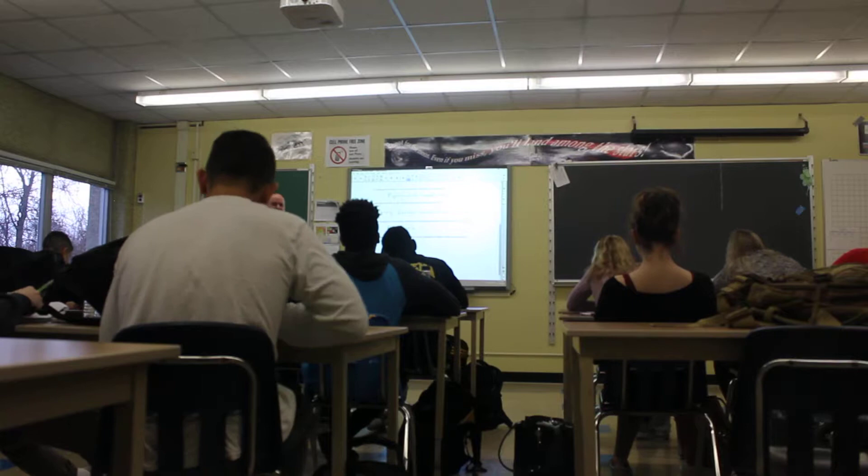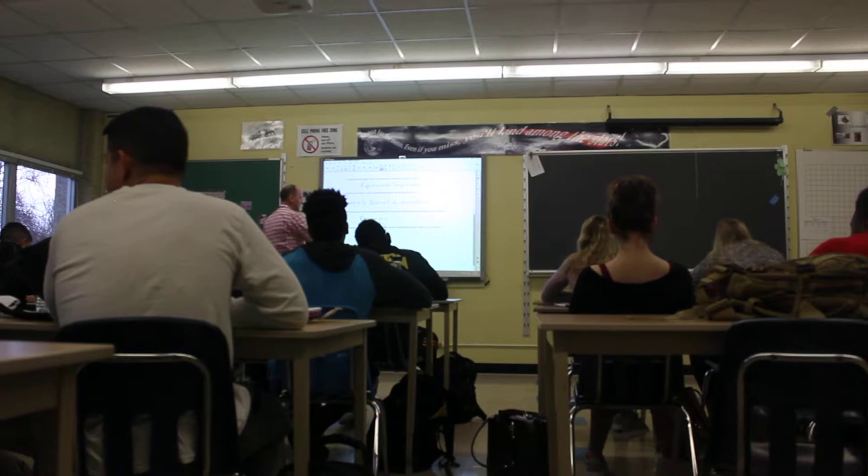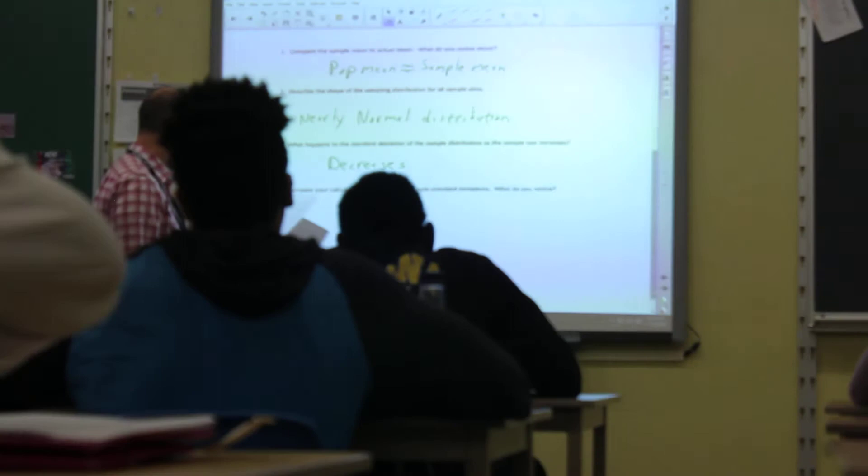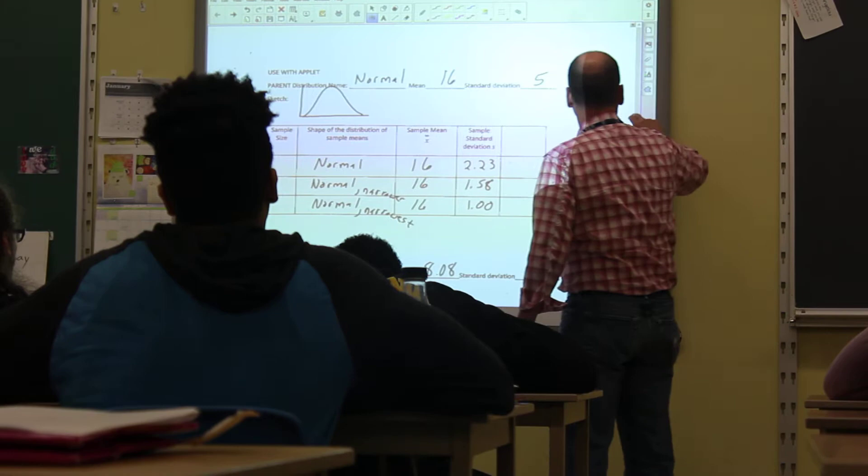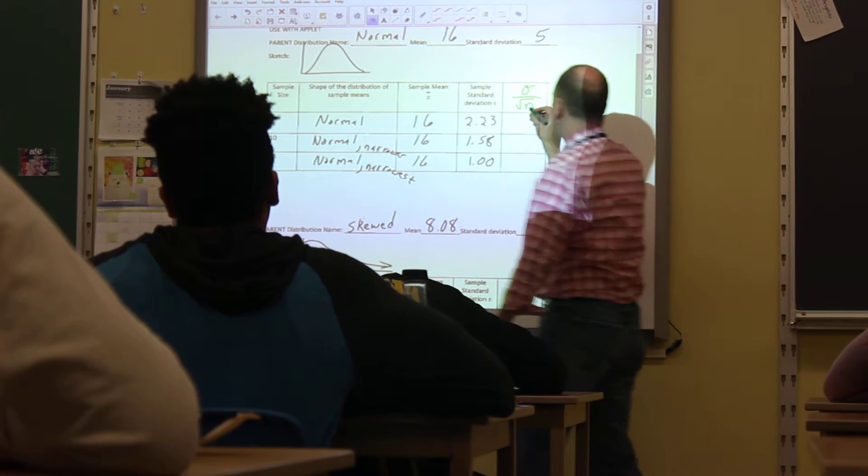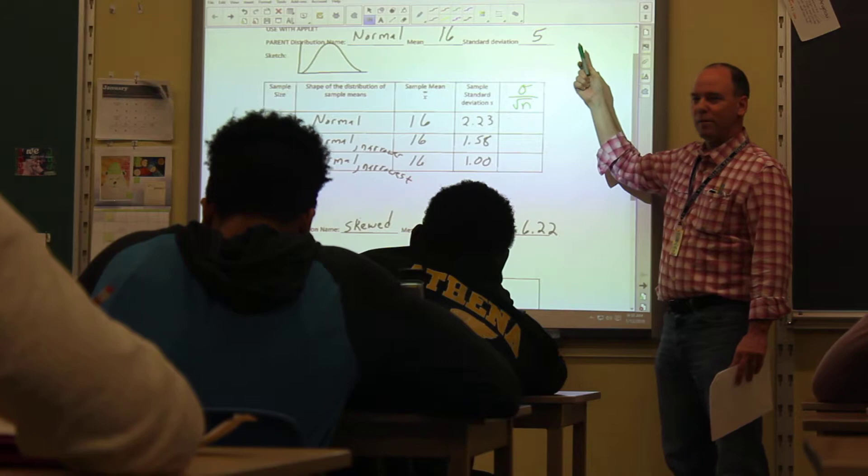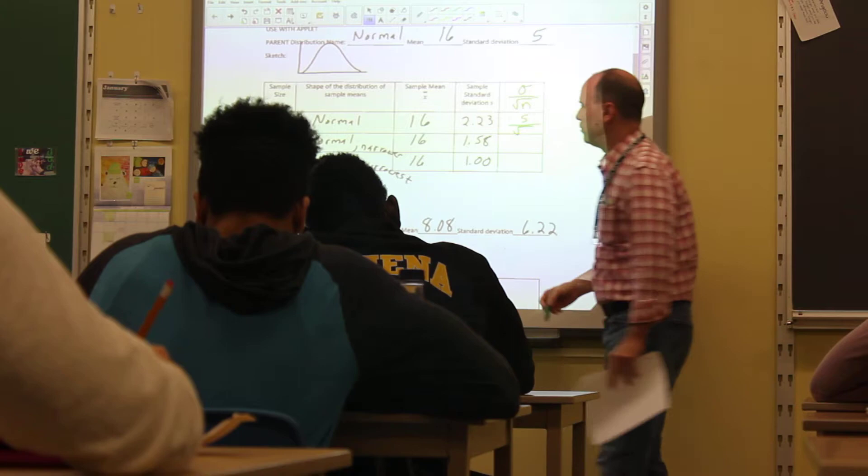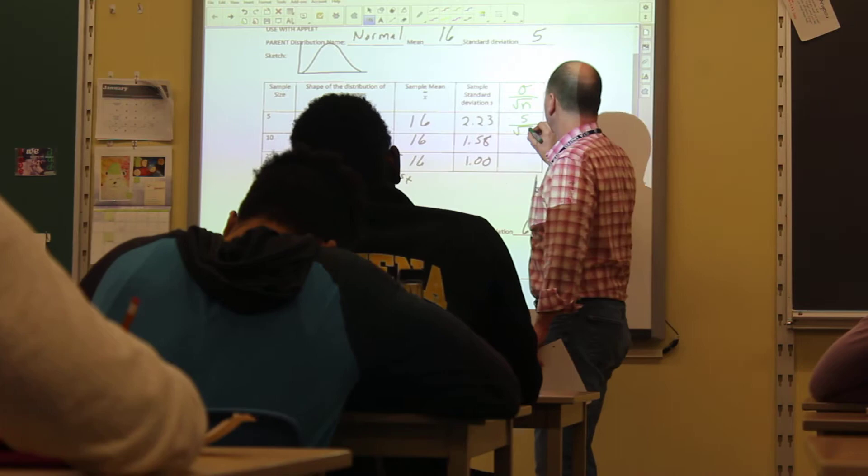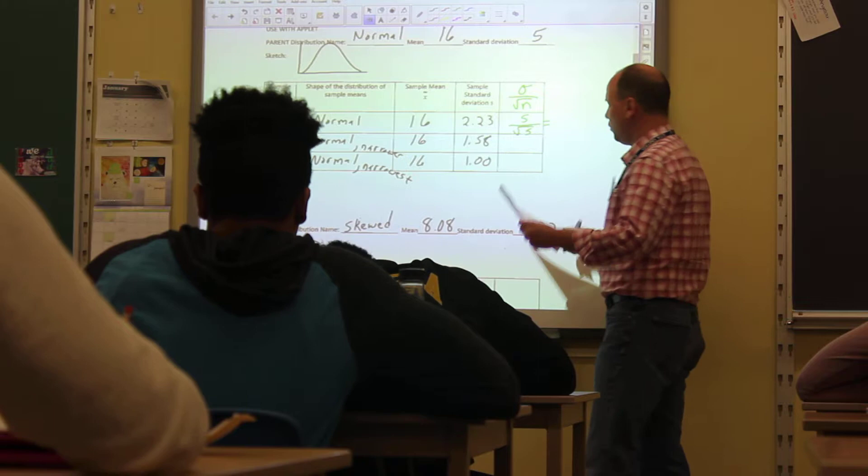All right, now I'm going to give you this new little formula. Standard deviation of our population divided by the square root of whatever the sample size is. For that very first one, we got a five for our standard deviation divided by the square root of our sample size. Our sample size for that first case was five. Two point two three, that's exactly what it came up with.